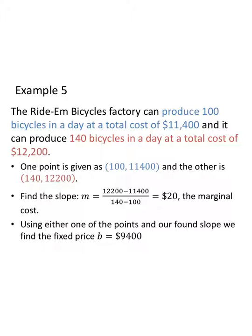Let's find a couple of points. So the Ride-Em Bicycles Factory can produce 100 bicycles in a day at a total cost of $11,400. So on input, 100 bicycles. Output, $11,400. That's going to be my first point. It can also produce 140 bicycles in a day at a total cost of $12,200. That's going to be my second point. Once I figure out what it is I'm looking for, I'm able to go back, take the information, and set up my points. Because once I have two points, the situation doesn't matter.